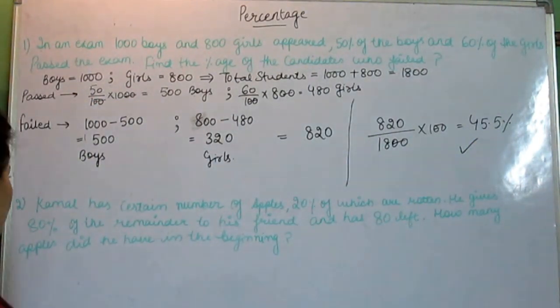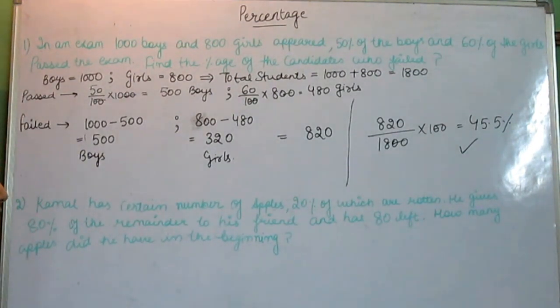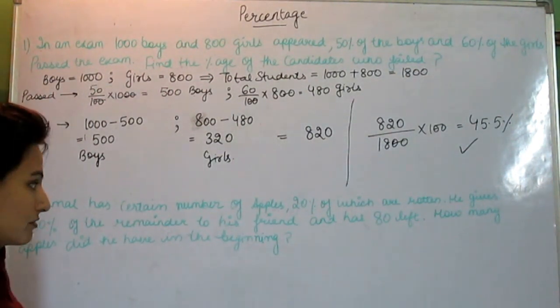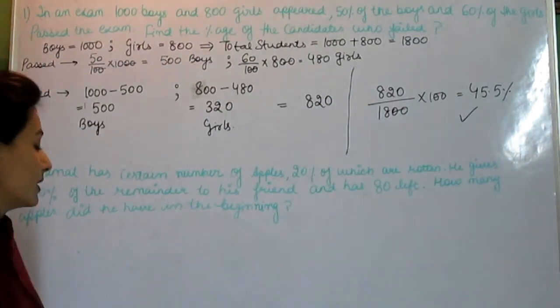Now come to the second question. Kamal has a certain number of apples, 20% of which are rotten. He gives 80% of the remainder to his friend and has 80 left. How many apples did he have in the beginning?